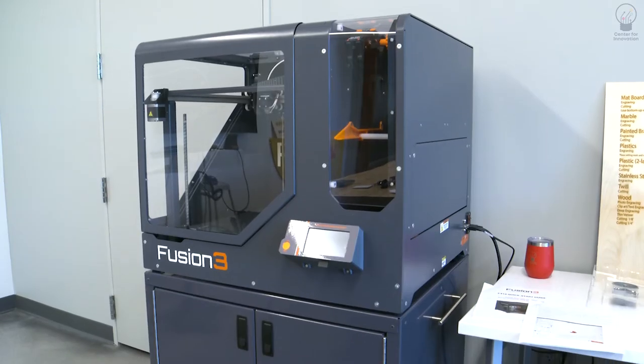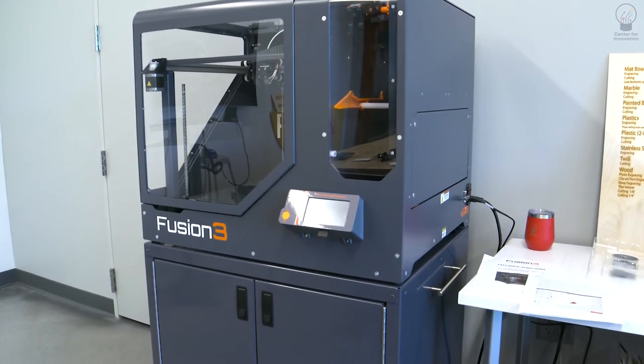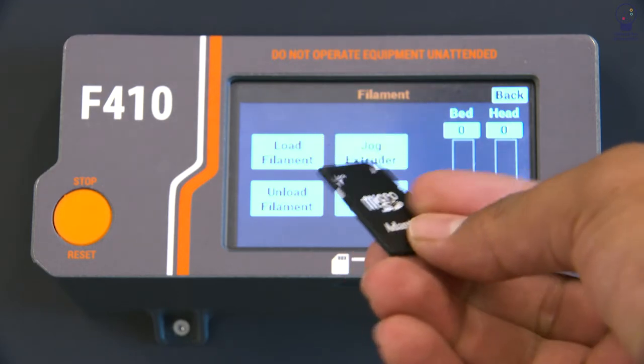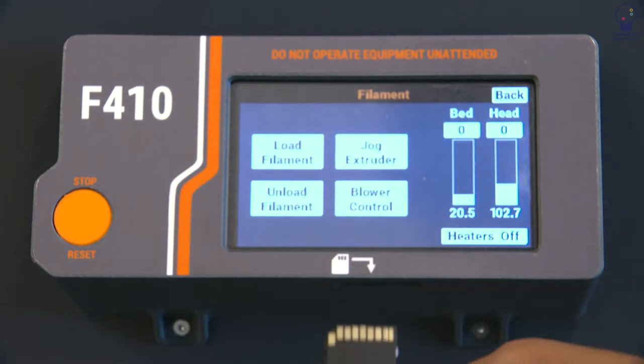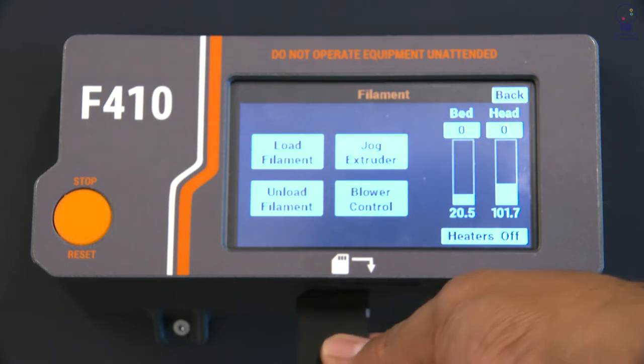After you have carefully ejected the SD card, you can move to the printer. Put the SD card in the machine below the screen with the back of the card facing toward you. Unlike this individual, watch what you're doing for maximum efficiency.